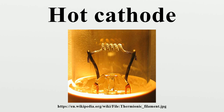There are two types of hot cathode. In a directly heated cathode, the filament is the cathode and emits the electrons. In an indirectly heated cathode, the filament or heater heats a separate metal cathode electrode which emits the electrons. From the 1920s to the 1960s, virtually every electronic device used hot cathode vacuum tubes.